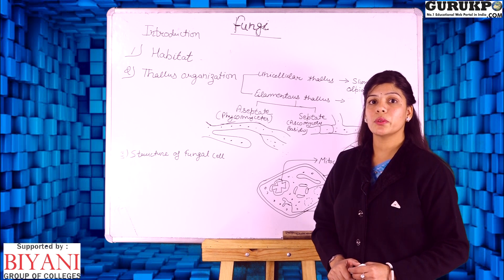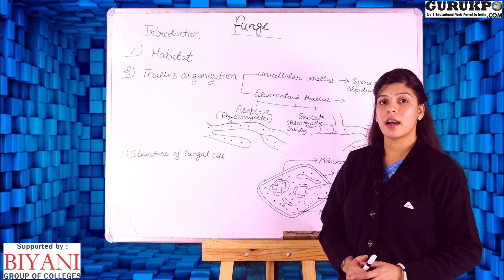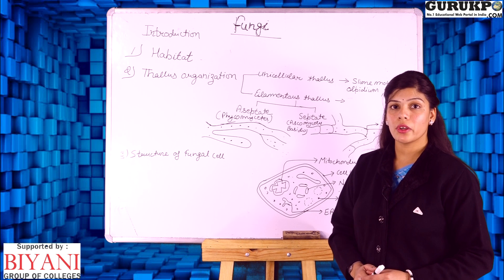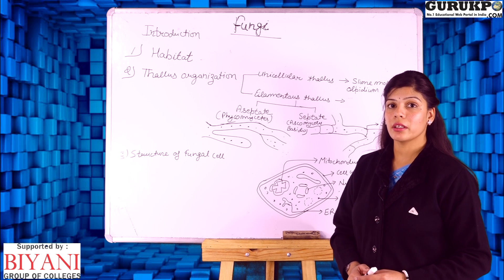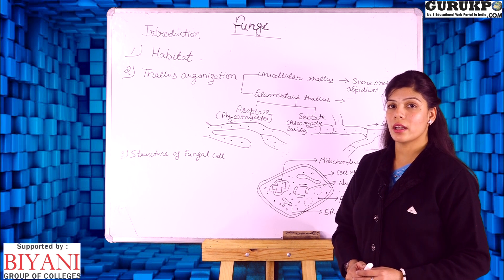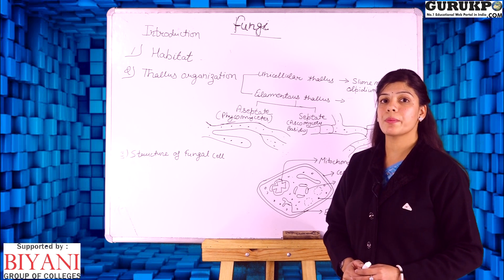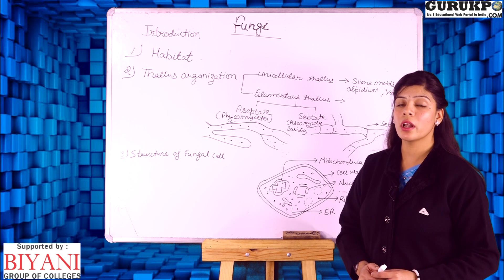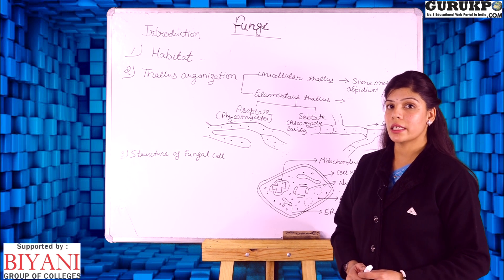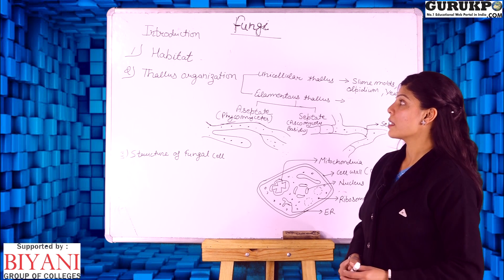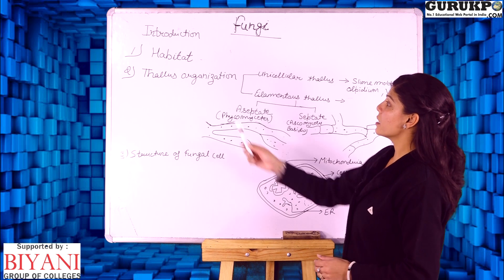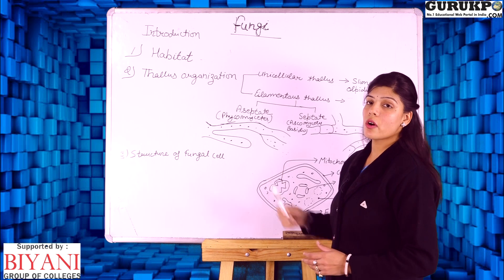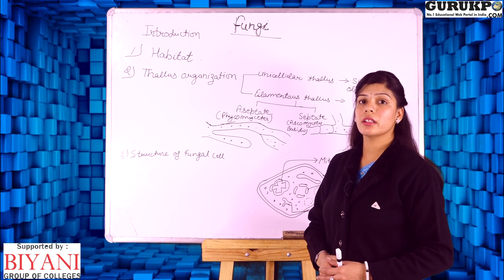Fungi are eukaryotic and achlorophyllous in structure because chlorophyll is absent in fungi, so they obtain their food from other organisms. The second category is thallus organization.